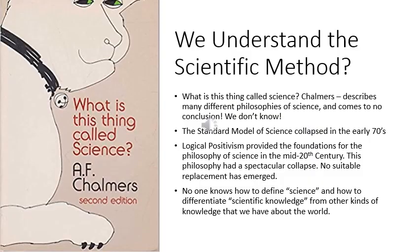An understanding of what the scientific method is emerged in the early 20th century with the name of logical positivism, and this had a spectacular collapse around the middle of the 20th century, so currently there is massive confusion about what science is. The standard model collapsed and nothing has emerged to replace it, so today nobody knows exactly how to define science and scientific knowledge, or how to differentiate it from other kinds of knowledge.